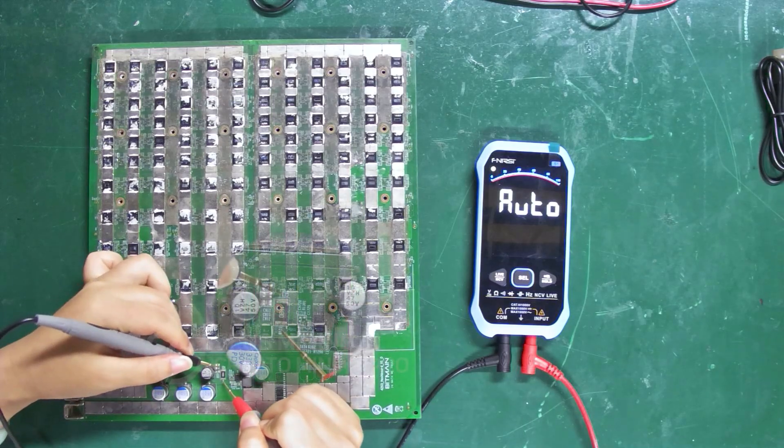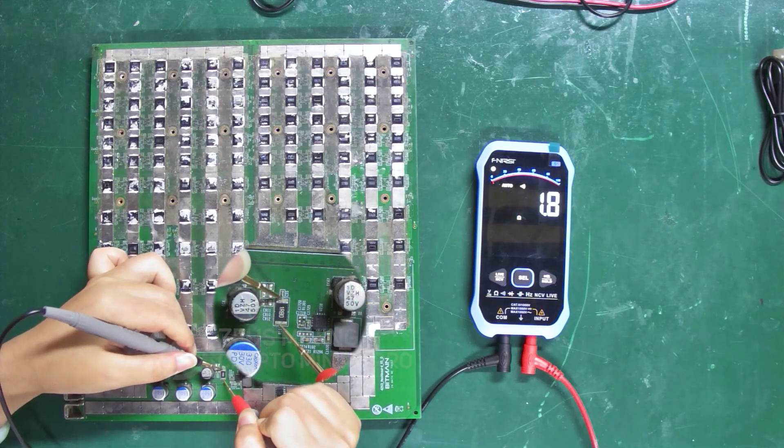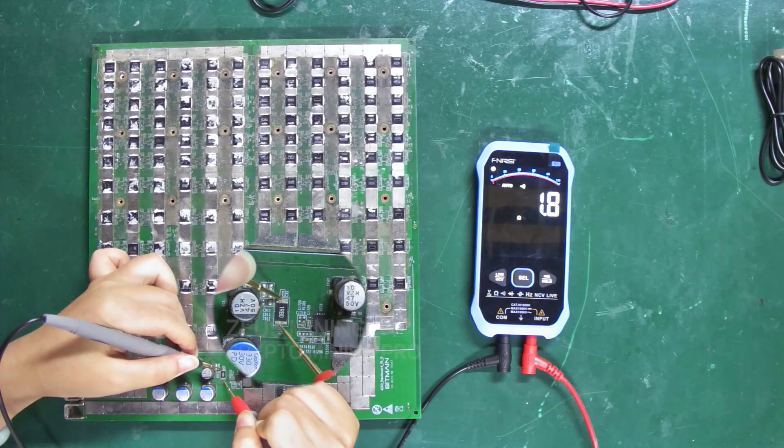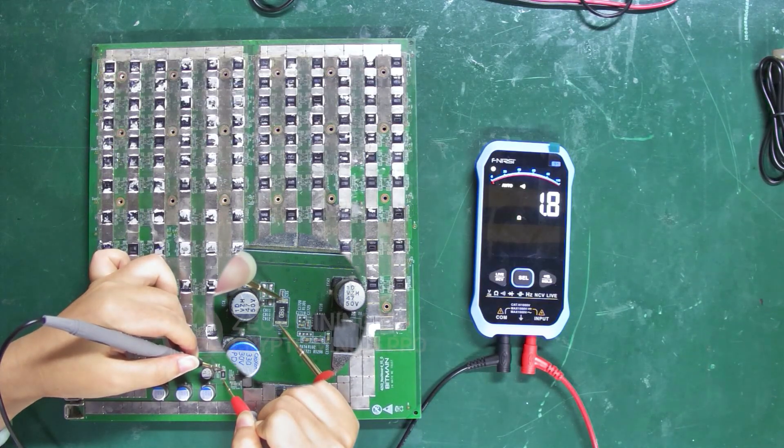We can also measure the resistor. It makes a beeping sound indicating that this is a good resistor, and the screen also shows that its resistance value is 1.8 ohms.